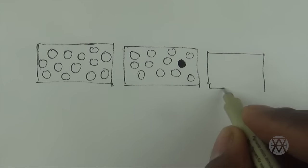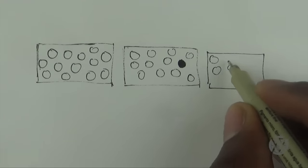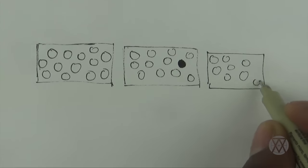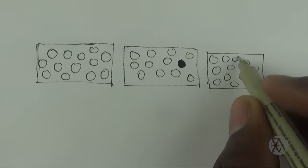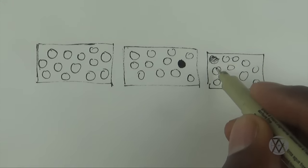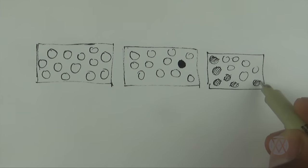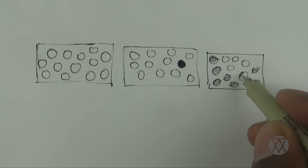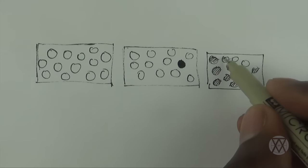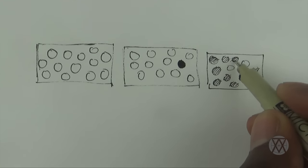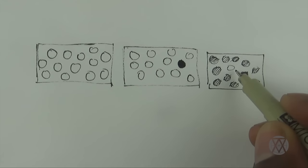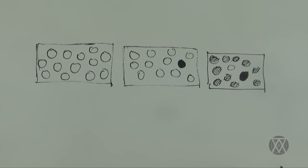Or if we had, say for example, a whole bunch of circles and they're all gray, and then we have one that's black. That could also create emphasis as well because it's the only black one.